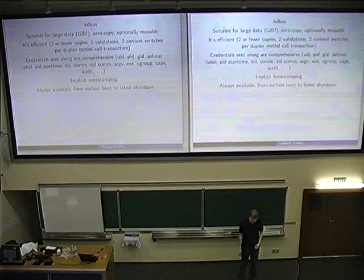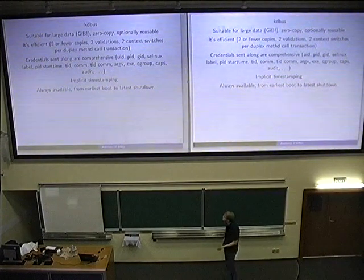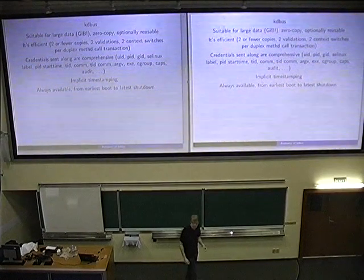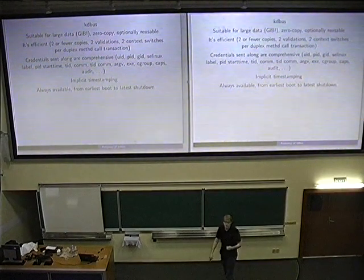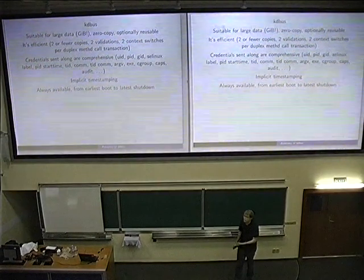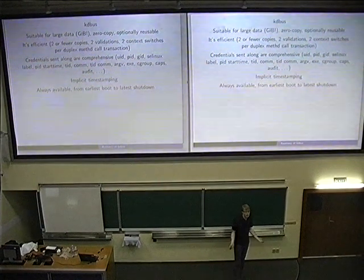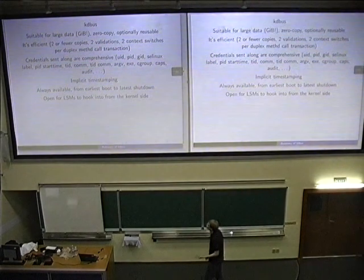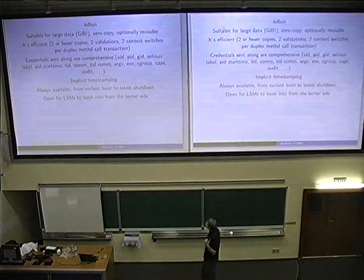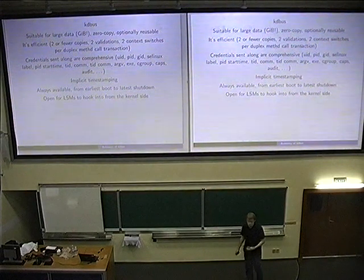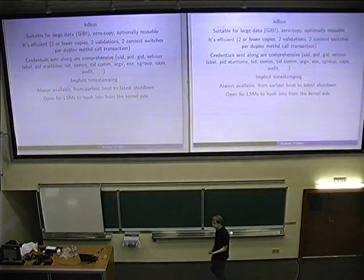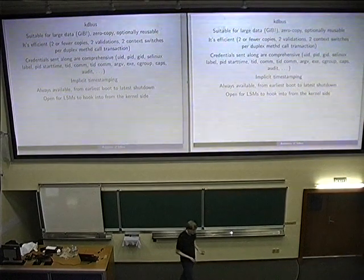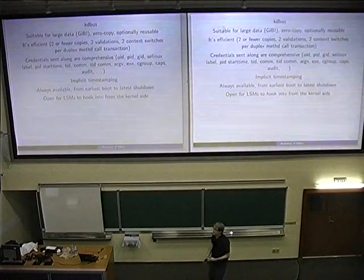KDBus is always available because it's a kernel facility set up really early at boot — you have it from earliest boot up to latest shutdown. This is incredibly useful for lower-level operating system developers, as we don't have to care about availability anymore. It is also open for LSM — Linux Security Modules — to hook into all decisions from the kernel side, so SELinux and whatever else can make those decisions in the kernel without ever leaving kernel space.